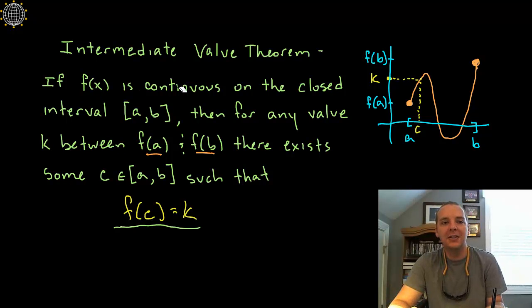It says if your function is continuous on a closed interval, so there's no breaks in the function or anything like that, then for any y value between f(a) and f(b), like I've drawn here, anybody, so we'll call it k, there has to be some x value called c such that f(c) gives you that y value.